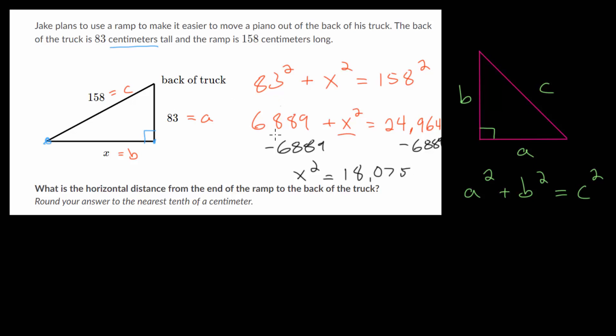And our final step is just to cancel out this square. So to do that, we will take a square root of each side so that we get x by itself.